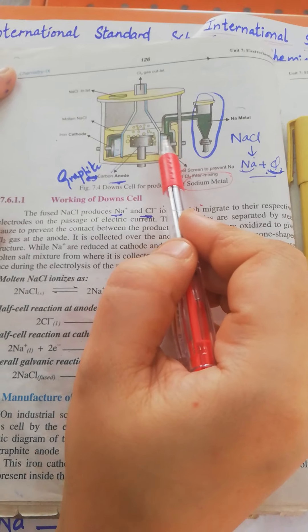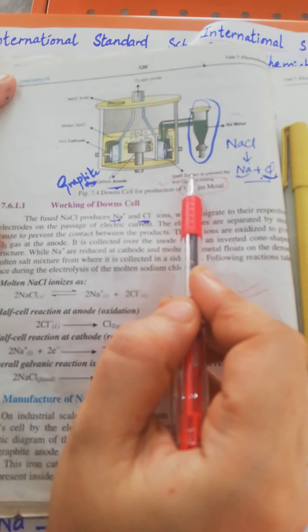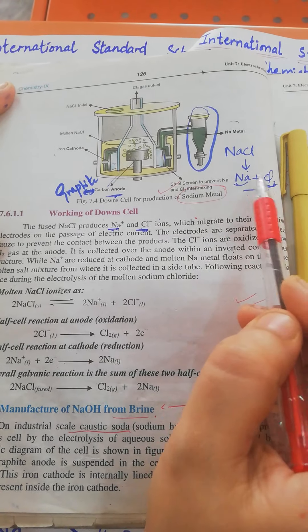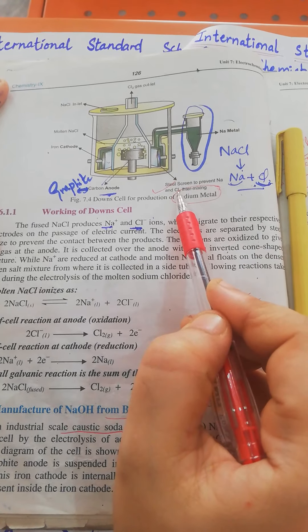These electrodes are separated with a steel screen to prevent sodium and chlorine from mixing.